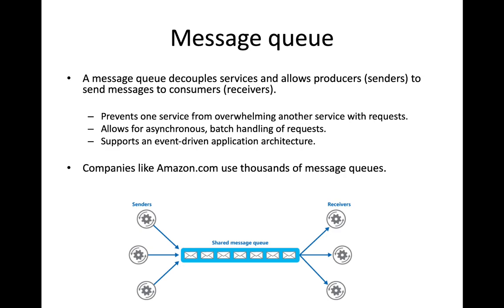This allows us to support what we call an event-driven application architecture. Many of the cloud-native applications we are building today are built around this event-driven architecture model. Message queues are incredibly important in these cloud-native applications, and companies like Amazon likely run hundreds of thousands of message queues within their computing environments.